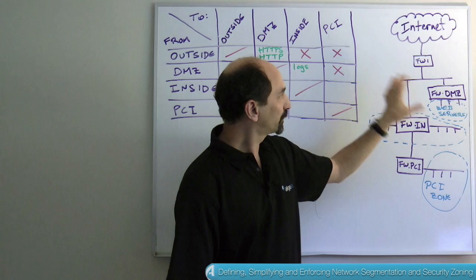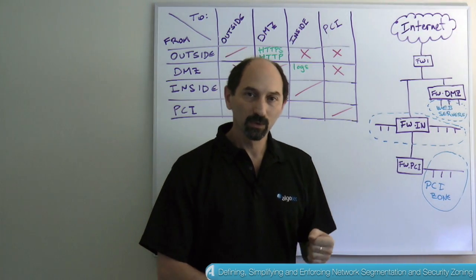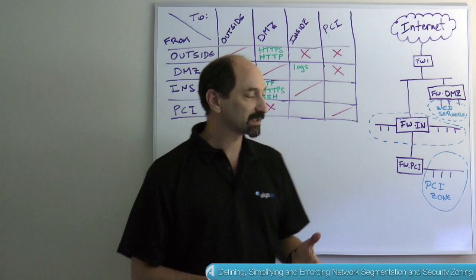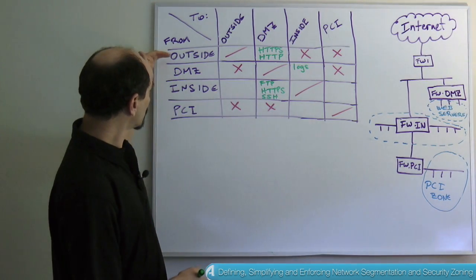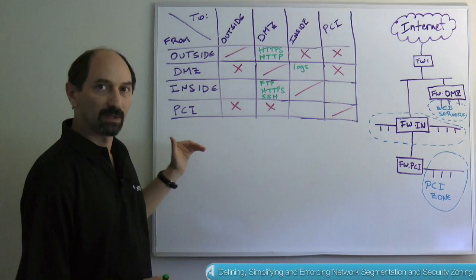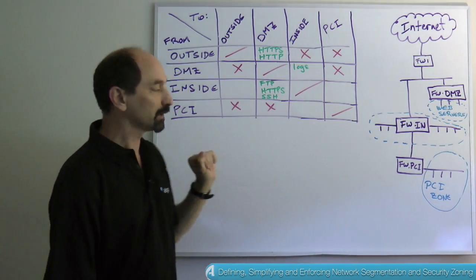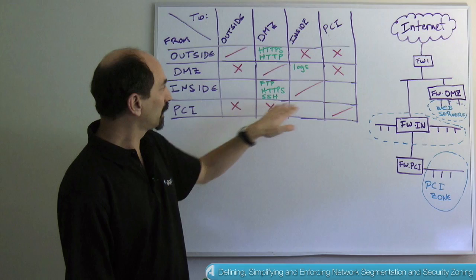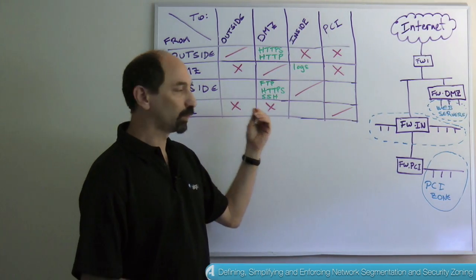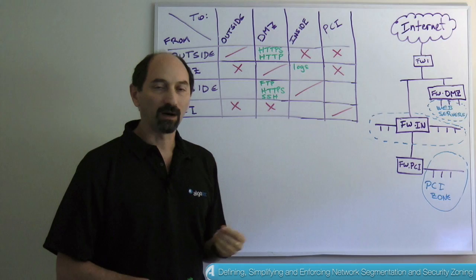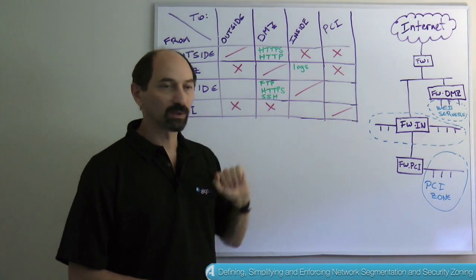And then once you have these different zones organized, you can write a high level security policy in matrix form, something like this, where you have all the zones, all the security zones on the from and all the security zones on the to, on the columns. And each cell of this matrix basically is supposed to indicate what types of traffic should be allowed by default between a particular zone to another one.